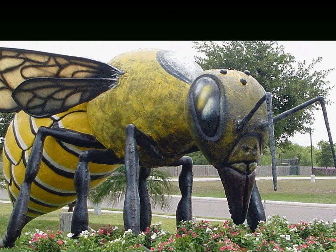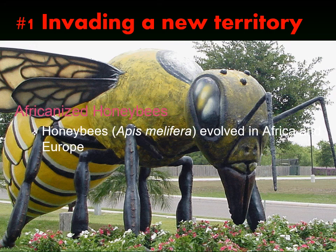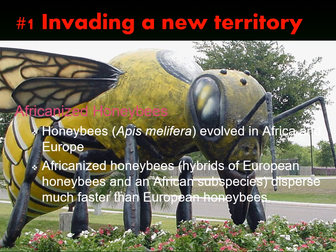Starting with invading new territory, we'll talk about Africanized honeybees. The honeybee evolved in Africa and Europe, with many locally adapted subspecies. We love honeybees because they store honey and also pollinate our crops. The temperate subspecies are a bit less aggressive, but tropical bees face much more competition for nest sites and are more aggressive. To use honeybees in the tropics, you need a tougher bee, so European and African subspecies were hybridized — these are called Africanized honeybees, sometimes referred to as killer bees.